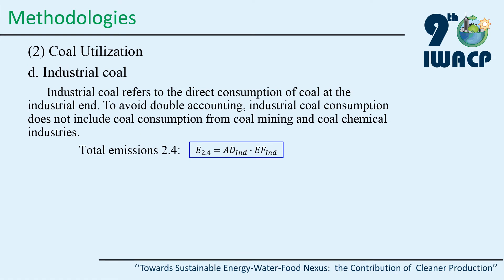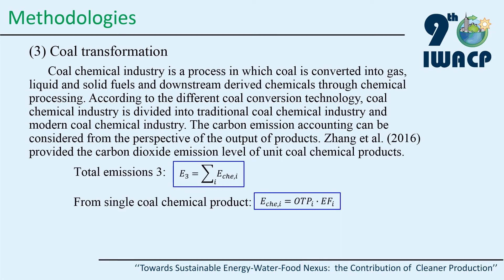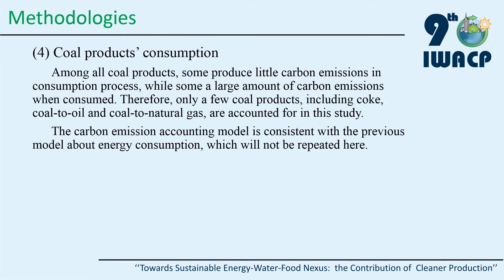Industrial coal refers to the direct consumption of coal at the industrial end. Coal transformation: coal is converted into gas, liquid, and solid fuels and downstream-derived chemicals. According to different coal conversion technologies, the coal chemical industry is divided into traditional and modern coal chemical industry. For carbon emissions from coal product consumption, this study accounts for coal, coal to oil, and coal to natural gas, since other products' emissions are too small. The carbon emission accounting model is consistent with the previous energy consumption model.